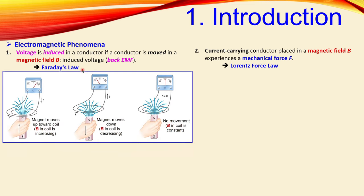The first is Faraday's law, which is very important. If I have a wire connected to a current meter and I place a magnet here and move it toward it — moving up — the current will flow in this direction. If I go down the current goes in the opposite direction. If there's no movement, there's no current flow. So to induce current, there must be some change in the magnetic field, shown here as the change in flux.